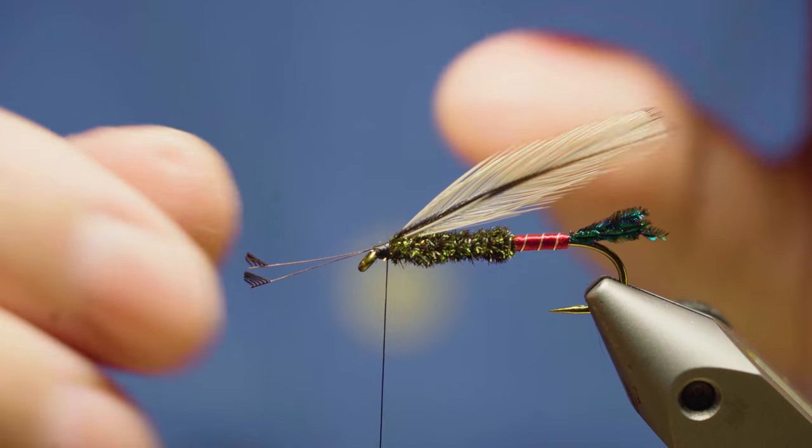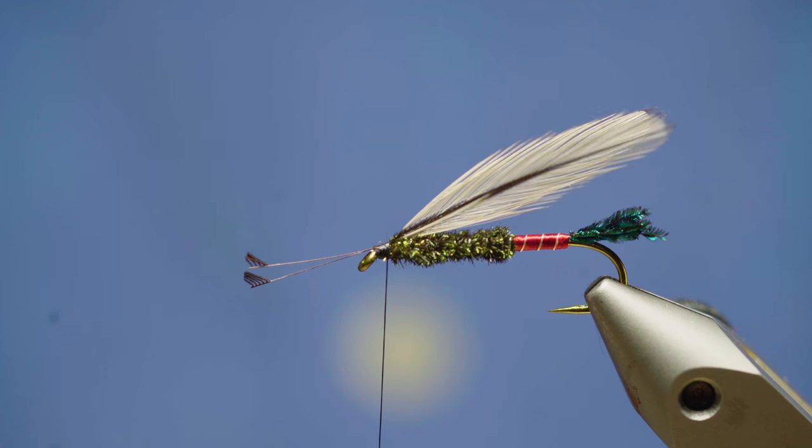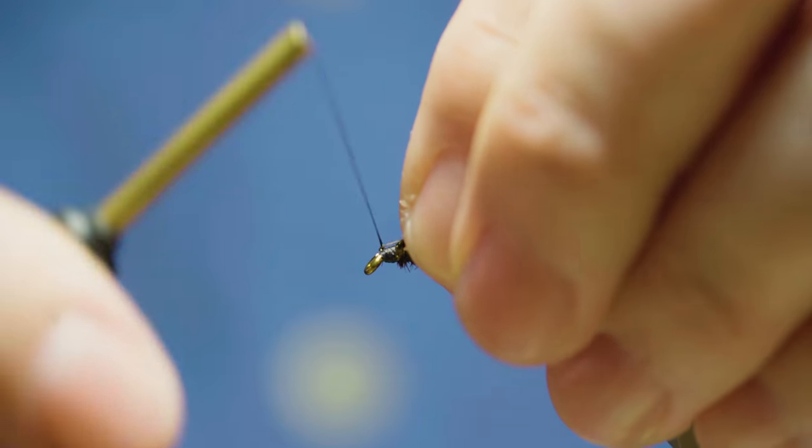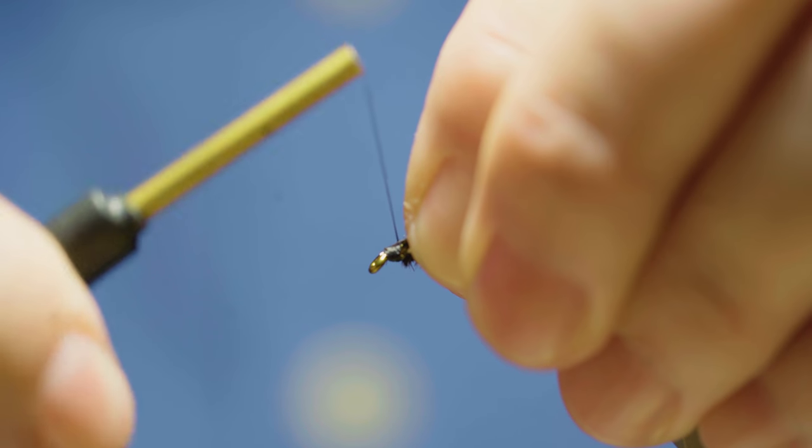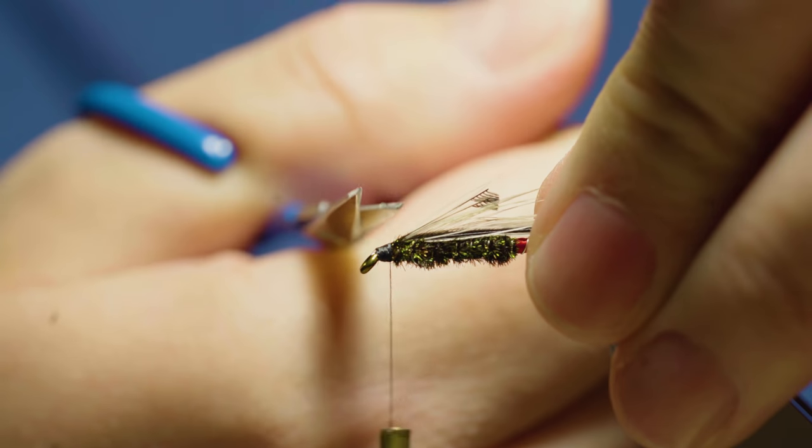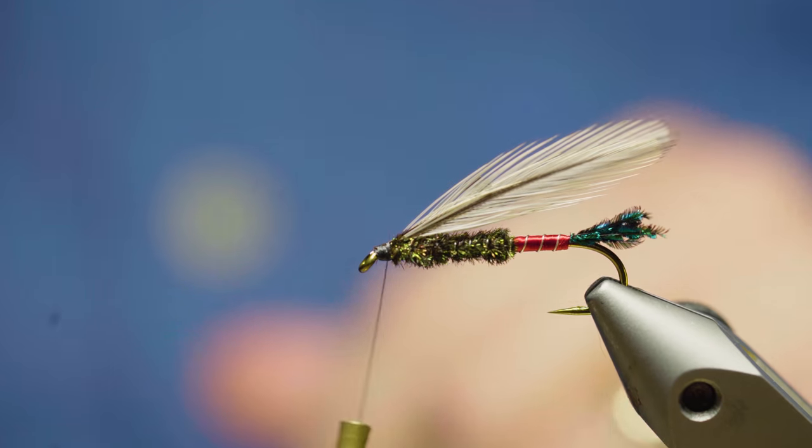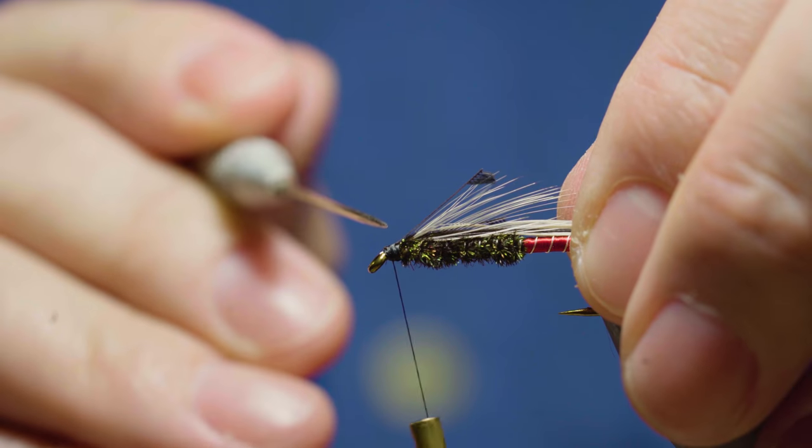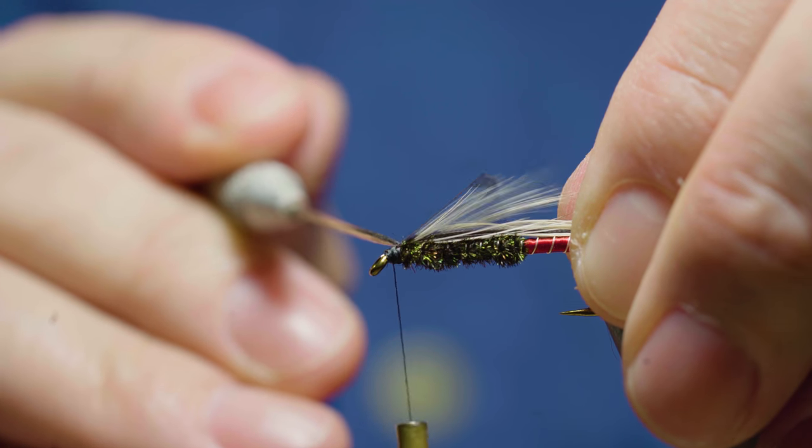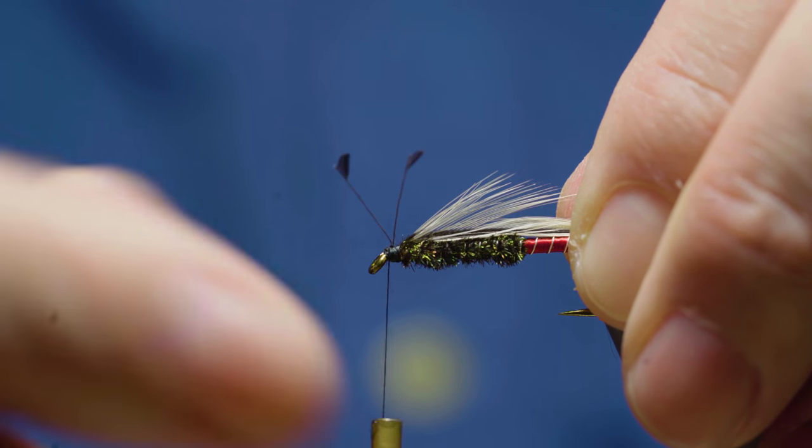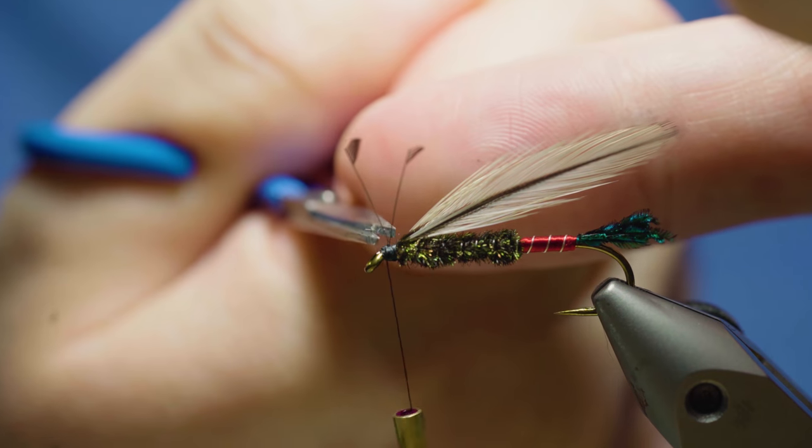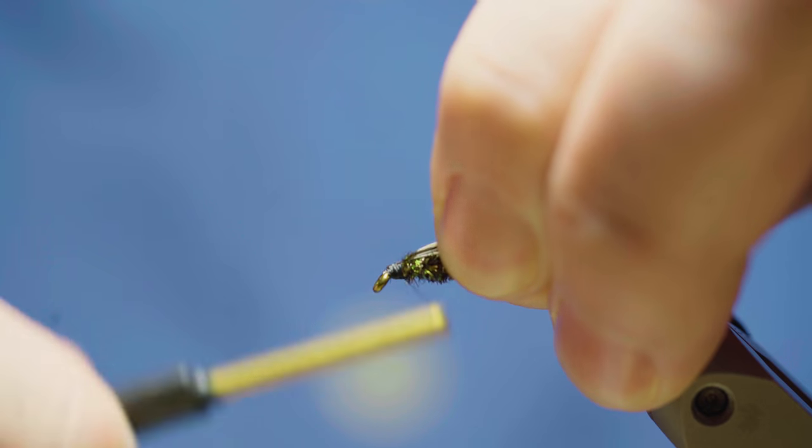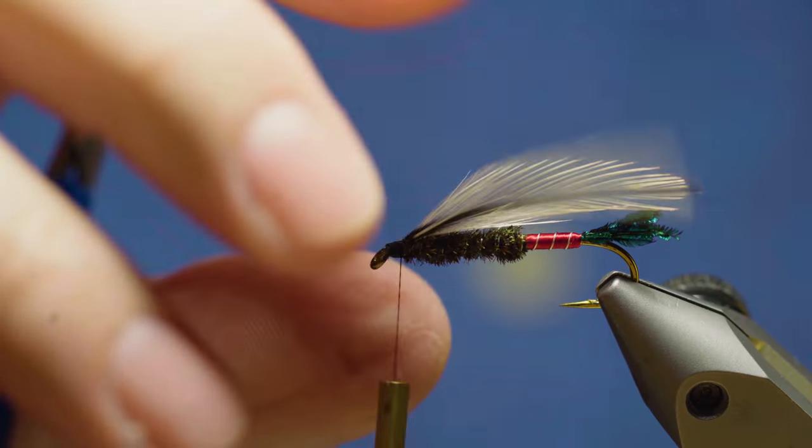Now, you can just cut that off and that would probably be fine and hold the wing. But what I like to do is I like to come up here, pull these fibers or the stems back and wrap over them and then take my bodkin and lift those up like that and get them up out of the way and then trim that and make a couple more wraps to get that all laid in place.